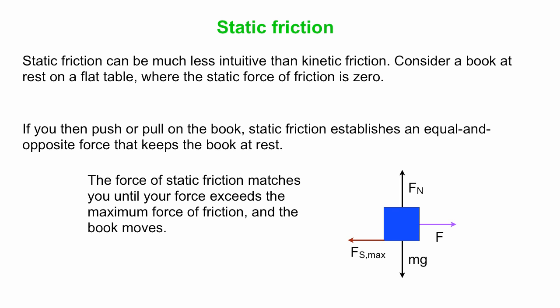Eventually you can push hard enough to move the thing, to move the book. So there is a limit, an upper limit, to that static friction force. We'll call it FS max. The force of static friction matches the force that you apply in the opposite direction until your force exceeds the maximum force of friction. Then the book moves, and then we'll switch over to kinetic friction again.